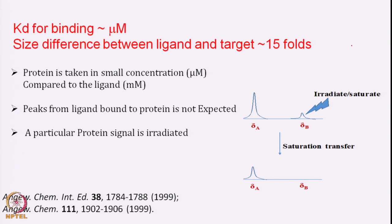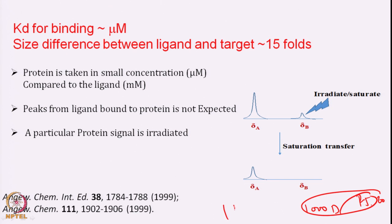The KD of such a process should be in the micromolar range. The size difference between ligand and target should be at least 15-fold — if your ligand is say 1000 Dalton, your protein should be more than 15 to 20 kilo Dalton; if it is more, it is better, otherwise the effect will not be seen. Protein is taken at very small concentration — you do not need large concentration of protein, you just need large concentration of ligand. So if you take protein concentration in a few micromolar and ligand concentration in millimolar, you can do these experiments.